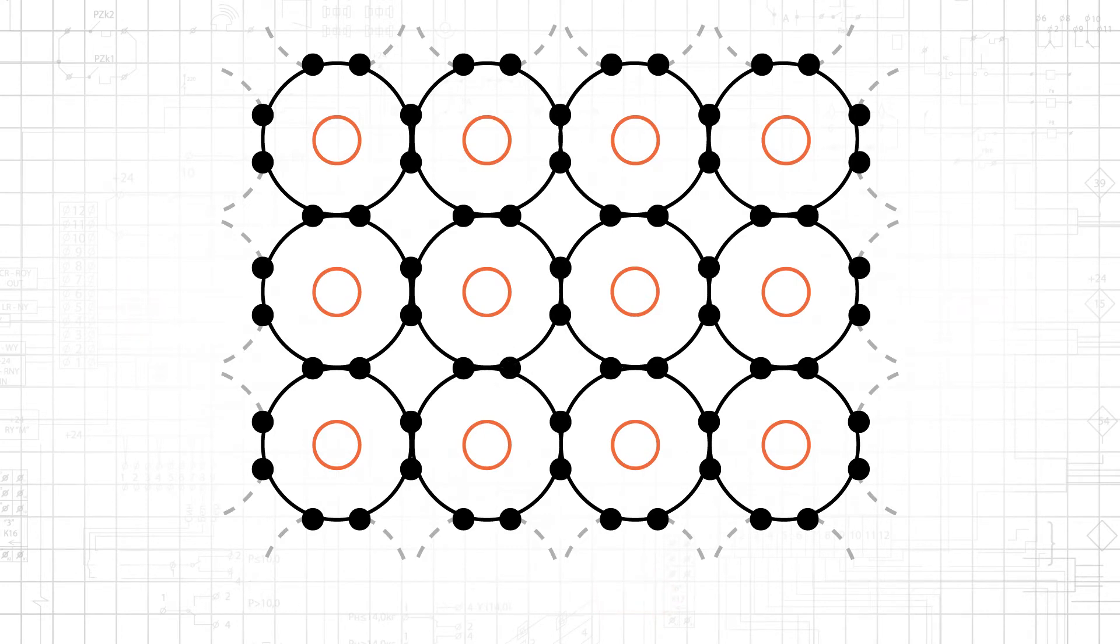We can control the quantity of charge carriers in a semiconductor by injecting other materials into the lattice structure. More specifically, we inject materials that have a different number of valence electrons. This is called doping.